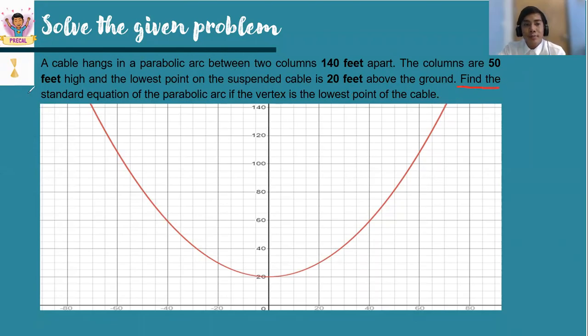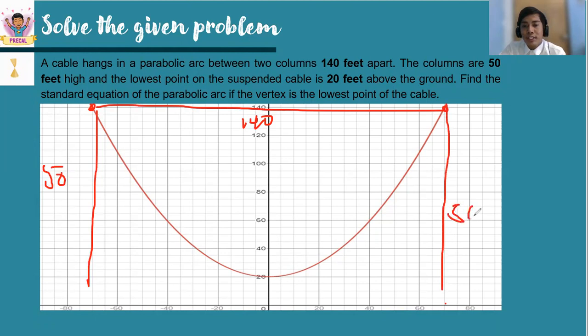So this time, we need to find the standard equation of the parabola. Imagine that this parabolic design is a suspension bridge. And on its suspension bridge, they are 140 feet apart. So that is 70 here and then negative 70 here. So that is the distance away from the two columns. The height of the column is 50, as well as on this side, it's 50.